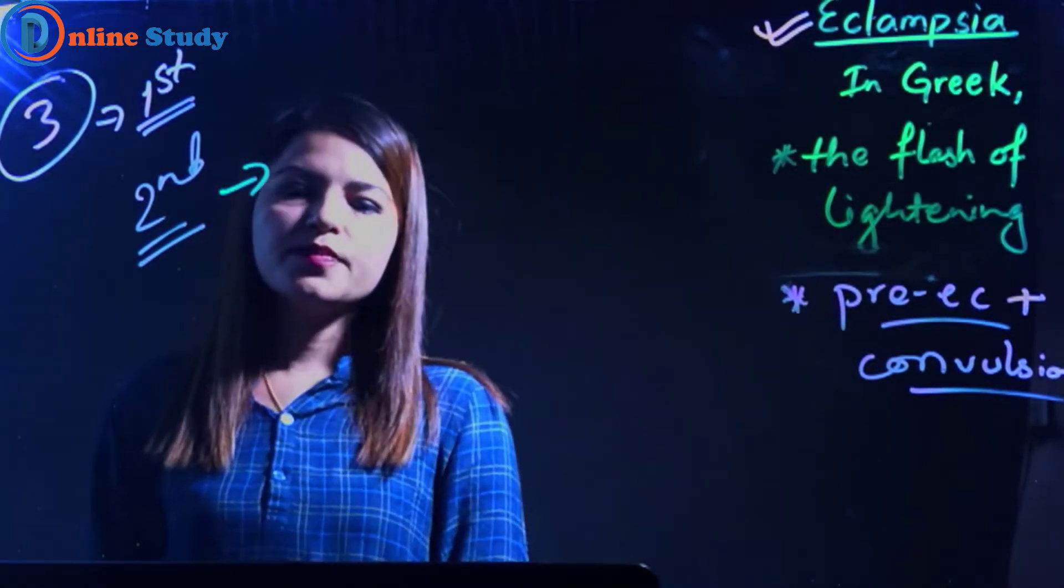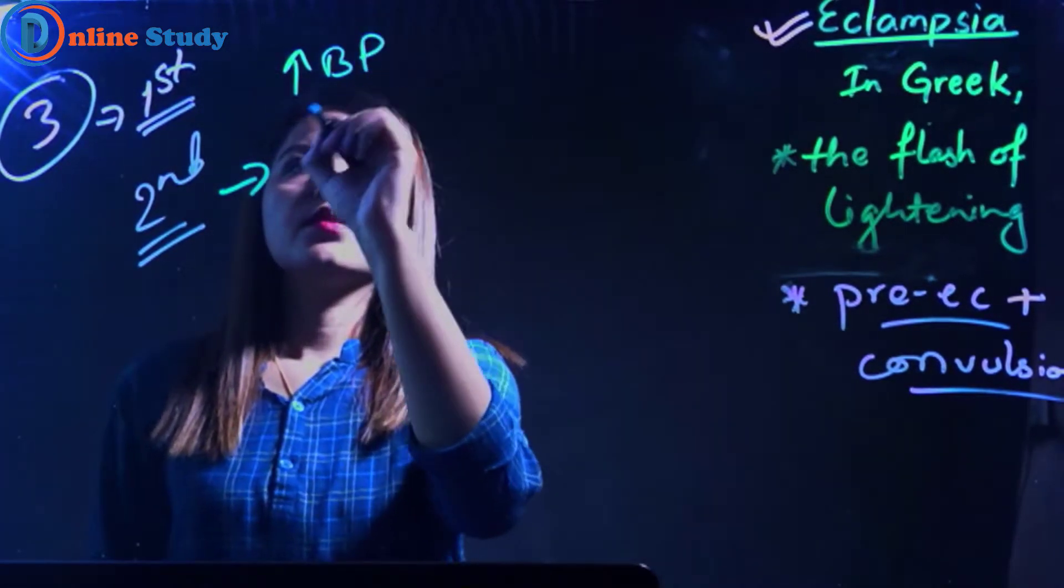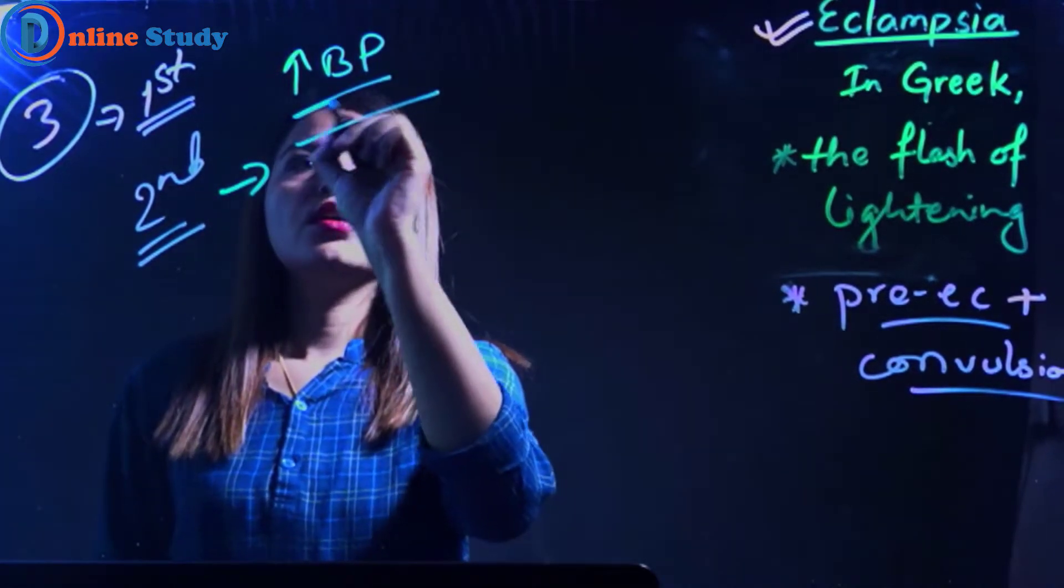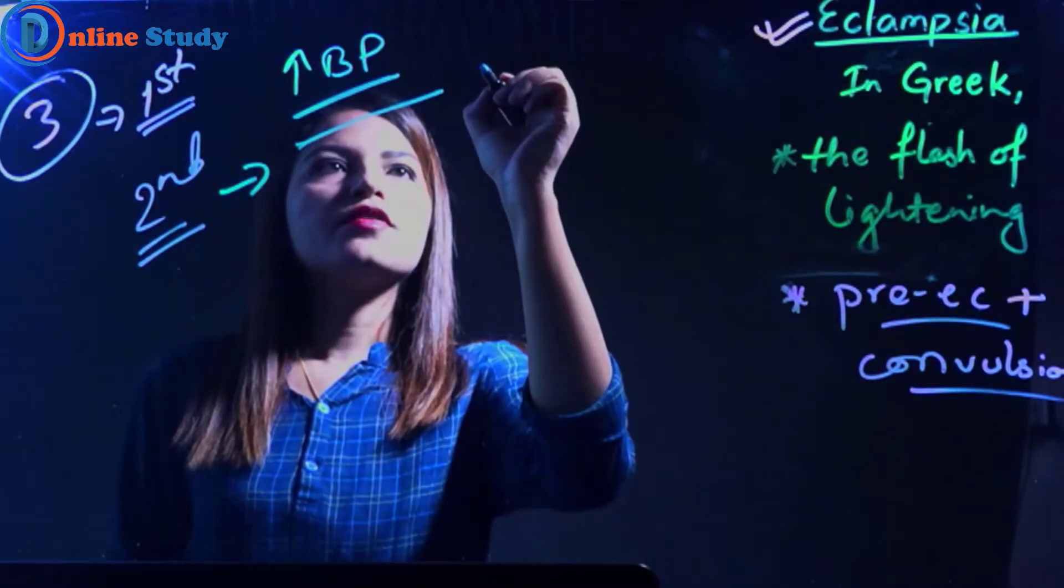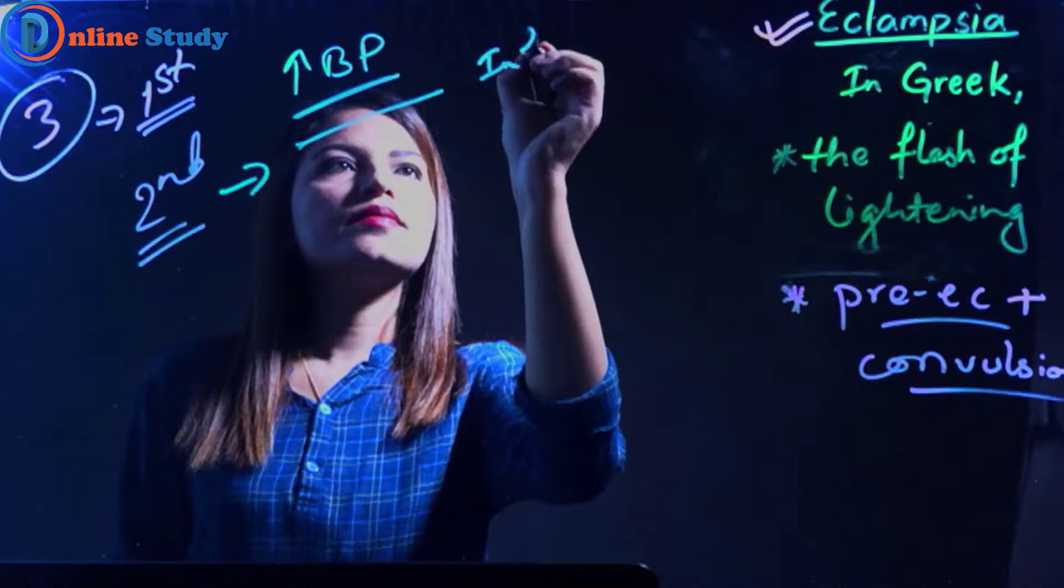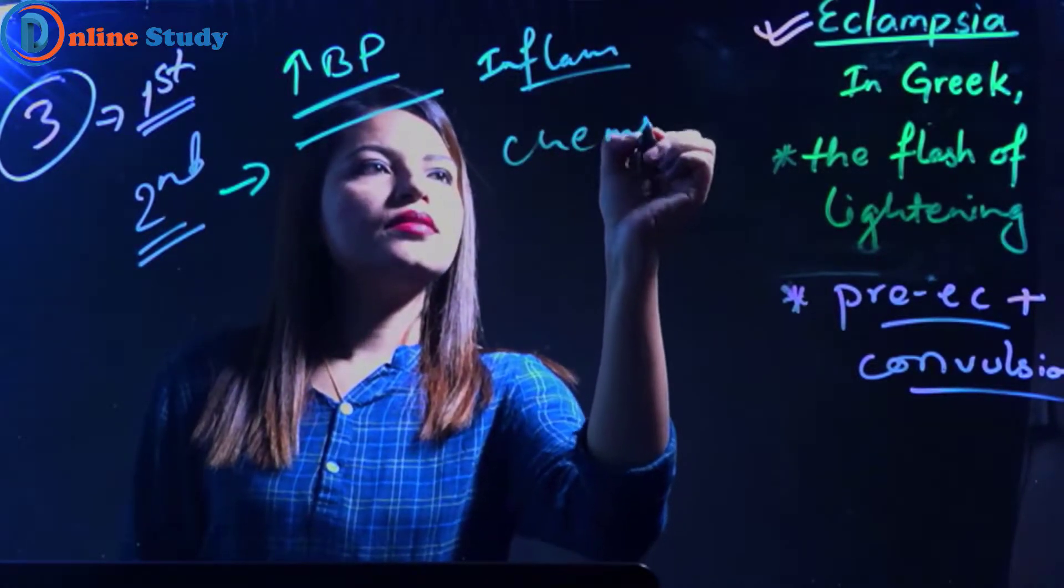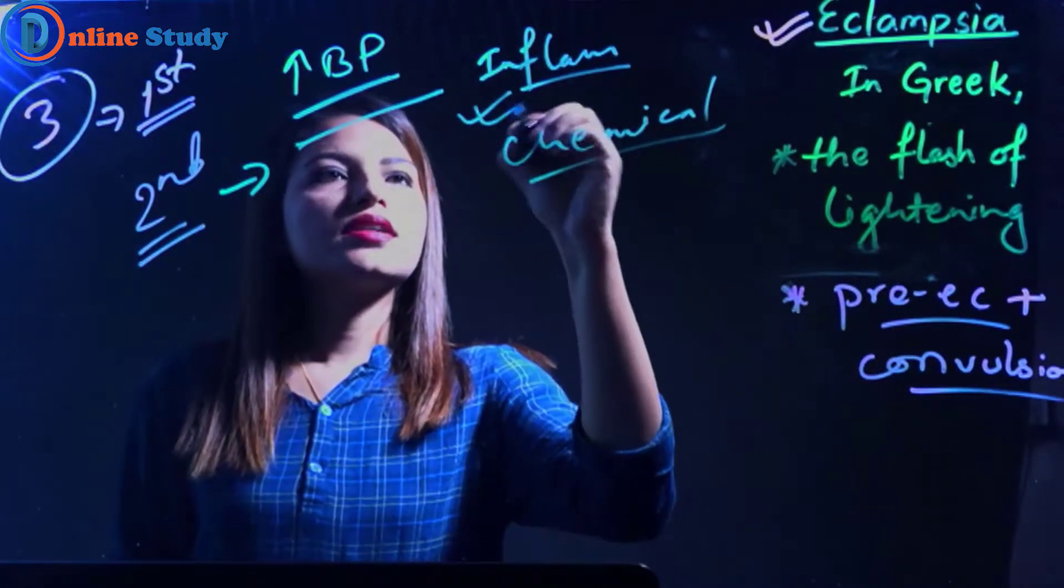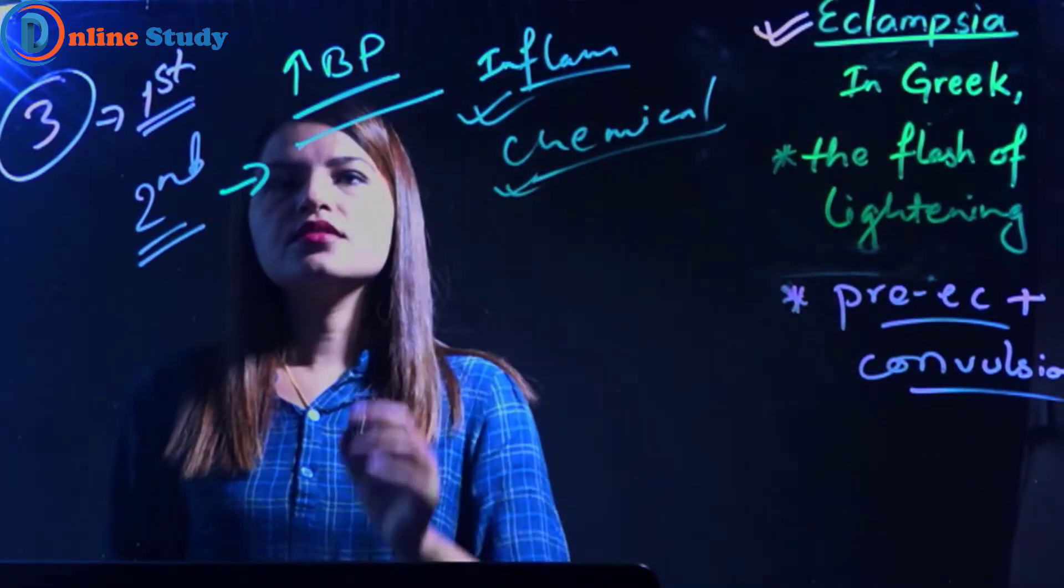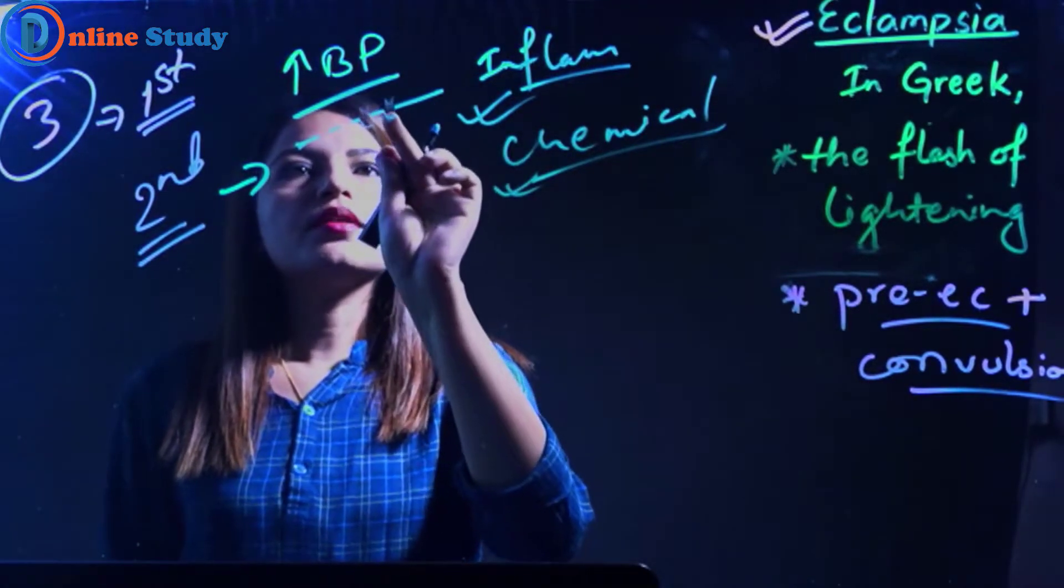Secondly, it can be explained by this: when there is rising blood pressure, what happens in the lumen of the vessels is there is a release of various inflammatory and endothelial mediators. Because of these inflammatory mediators, there occurs disturbance in the endothelium of the